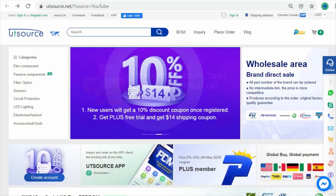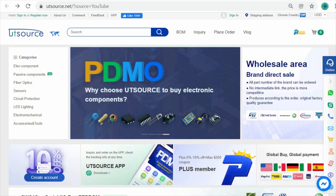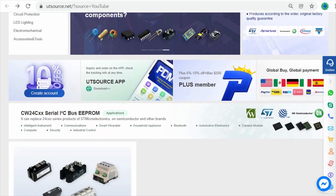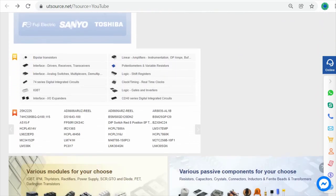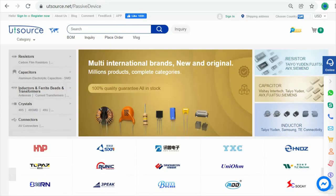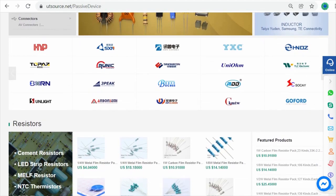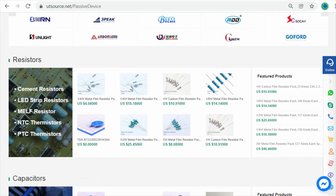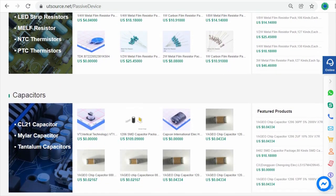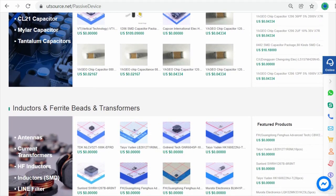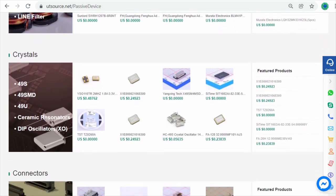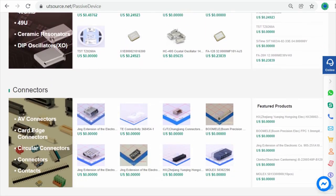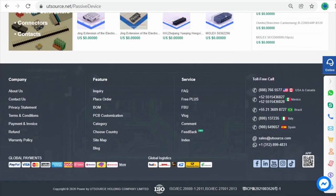UTSource.net is a professional purchasing website in the field of electronic components. UTSource.net provides different types of electronic components such as IC chips, capacitors, transistors, resistors, LEDs, diodes, sensors and electrical and electronic tools. UTSource.net is the most complete and professional electronic components mall. If you want to visit UTSource.net and buy electronic components, the link is in the description.